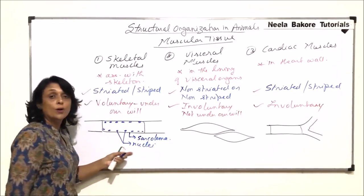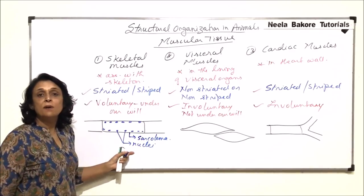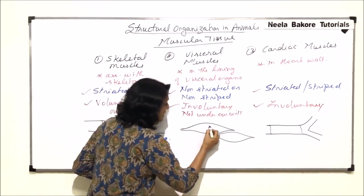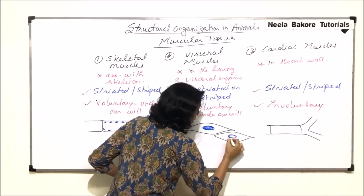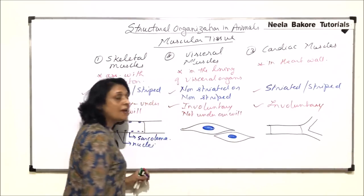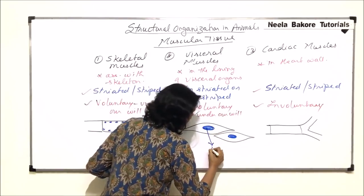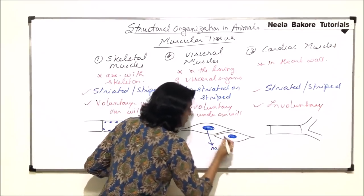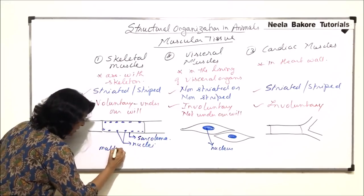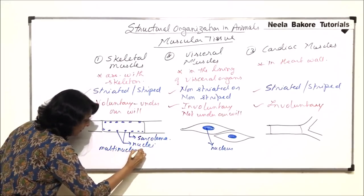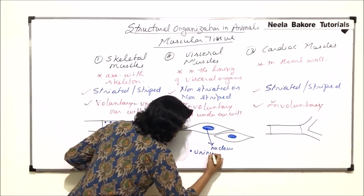The skeletal muscle cell or skeletal muscle fiber is multi-nucleate. In the case of smooth muscles or visceral muscles, there is only one large nucleus, so it is uninucleate.